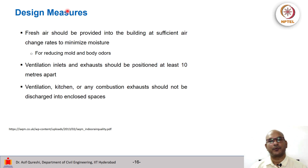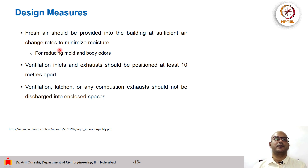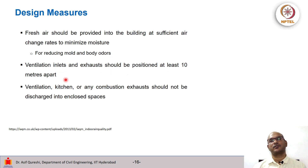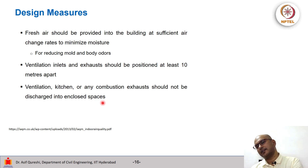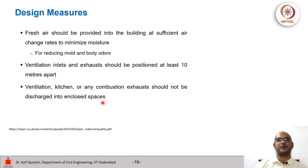Good design measures can also be adopted. For example, fresh air can be provided into the building at sufficient air change rates to minimize moisture build-up, which in turn will reduce mold and body odours. Ventilation inlets and exhausts should be positioned at least 10 meters apart, otherwise whatever exhaust comes out immediately goes back in. Kitchen or any combustion exhaust should not be discharged into an enclosed space, because that would mean sucking polluted air from one place and putting it in another. Exhaust should go out where the pollution can be diluted.